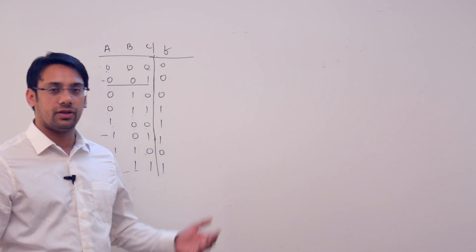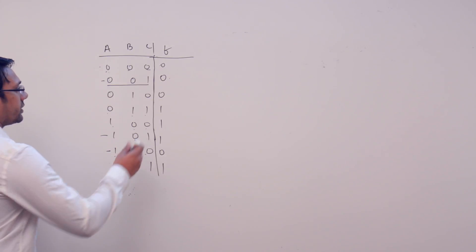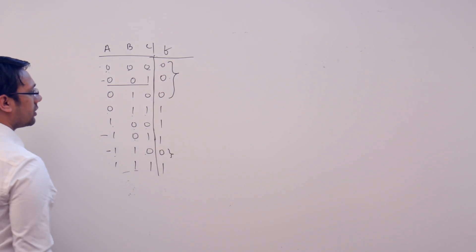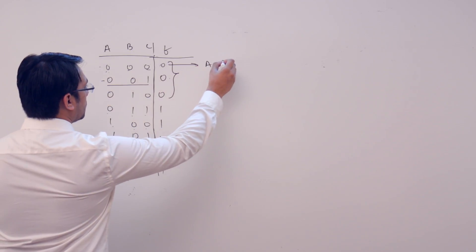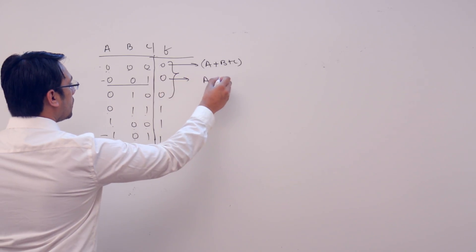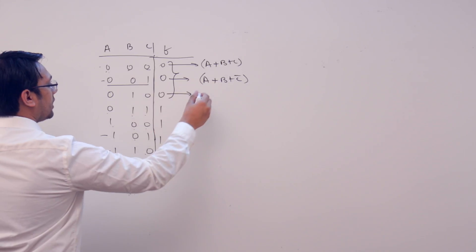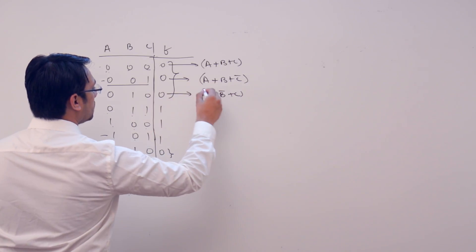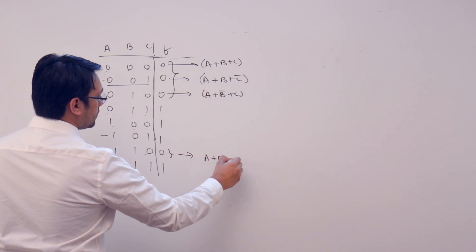Assume we are having this function. This function is assuming a value 0 at this location as well as at these locations. I can represent this value as a plus b plus c, this value as a plus b plus c complement, this value as a plus b complement plus c, and this value as a plus b plus c complement.